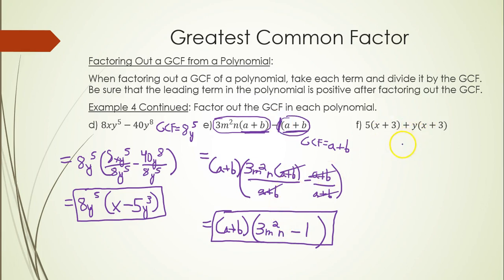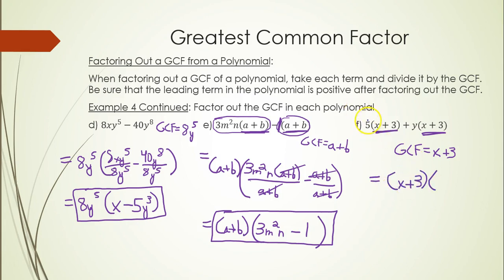For part f, the common binomial factor is (x + 3), so (x + 3) goes in one set of parentheses, and the remaining coefficients — 5 and +y — give (5 + y) in the other set of parentheses. This leads us into factoring by grouping, which we will cover next time. Thanks for watching.